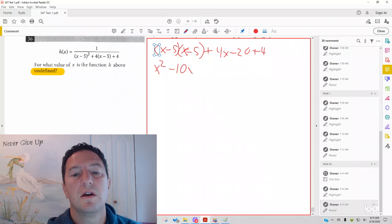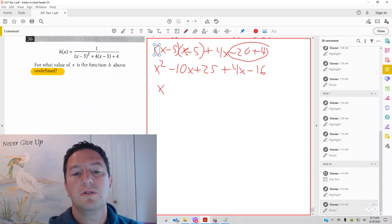We could just combine those to minus 10x plus 25, plus 4x. And you could combine these to get you minus 16. There's only one x squared term. It's here. We could combine these two. You get minus 6x. You could combine these two. You get plus 9.